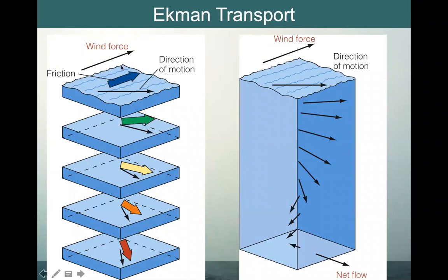We need to think about what that wind forcing will do to the ocean, so we come back to Ekman transport. Ekman thought about how wind forcing — if the wind is moving in one direction — will pull the water below it in the same direction due to friction. However, because of Coriolis, the actual direction of motion of the water is offset to the right. Each layer below that has the frictional pull in the same direction, but due to Coriolis is also offset slightly to the right, and so on down to our level of no motion.